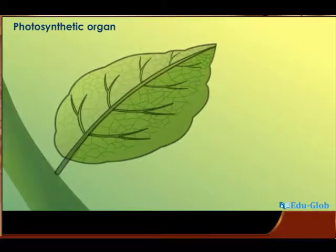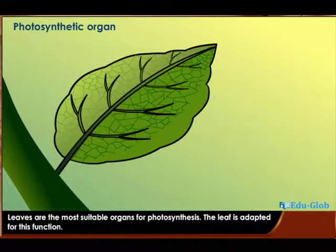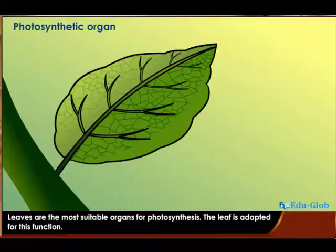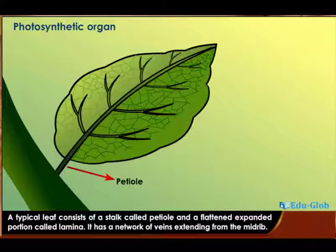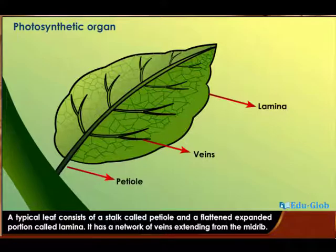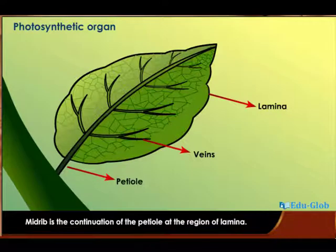Leaves are the most suitable organs for photosynthesis, and the leaf is adapted for this function. A typical leaf consists of a stalk called the petiole and a flattened expanded portion called the lamina. It has a network of veins extending from the midrib. The midrib is the continuation of the petiole at the region of the lamina.